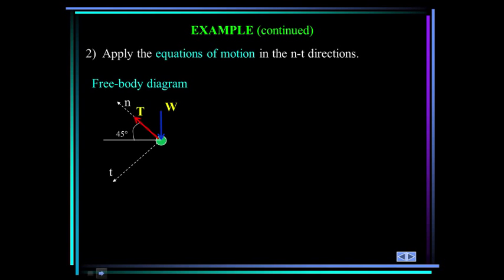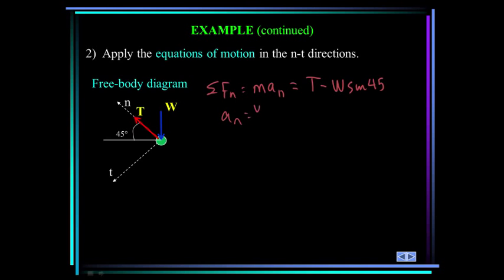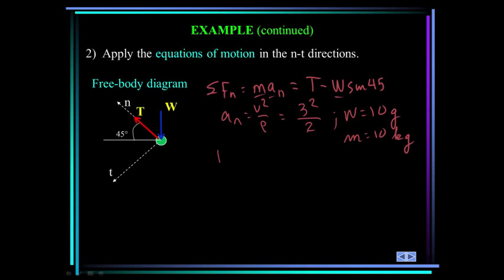Applying the equations of motion: summing forces in the normal direction equals mass times normal acceleration. In the normal direction we have T minus the component of weight W sin(45°). The normal acceleration is v²/rho = 3²/2. The ball is 10 kg, so weight is 10g and mass is 10. With known mass, acceleration, and weight, we can solve for the tension T, which equals 114 newtons.